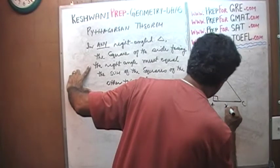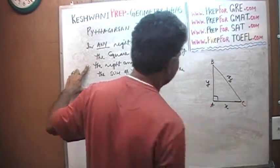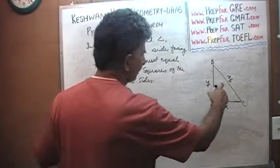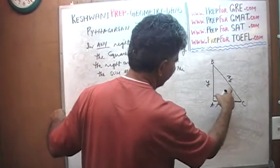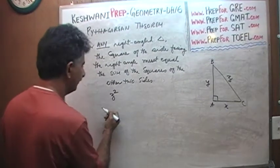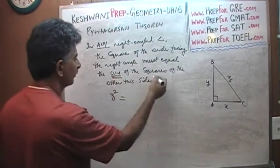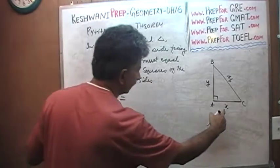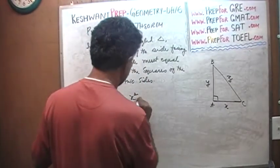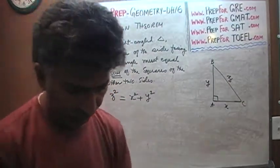For example, if I were to call one side X, another side Y, and the hypotenuse side Z, what the Pythagorean Theorem says is that Z squared — the square of the side facing the right angle — must equal the sum of the squares of the other two sides: X squared plus Y squared. There is your Pythagorean Theorem.